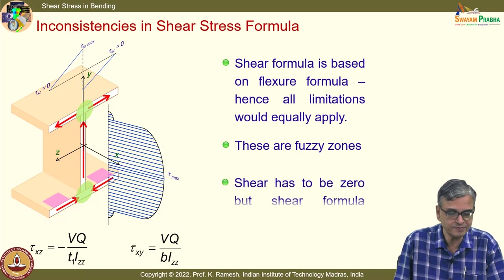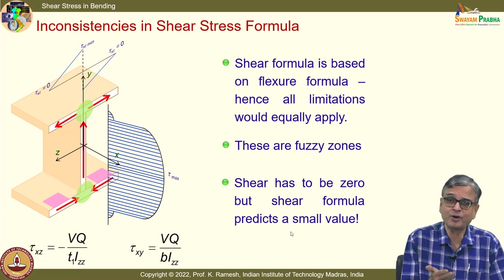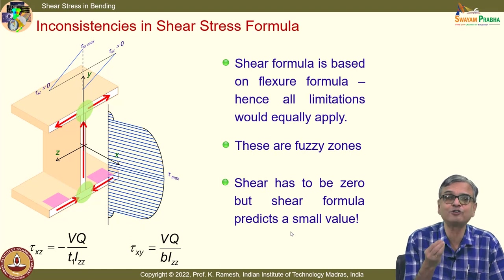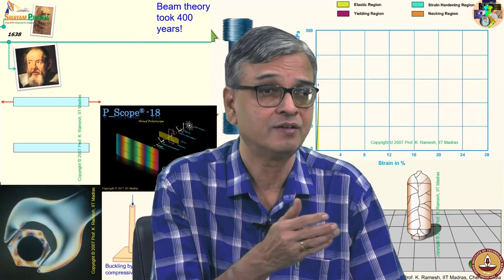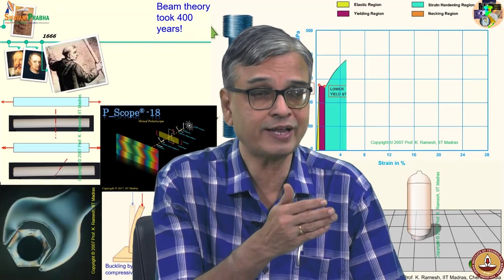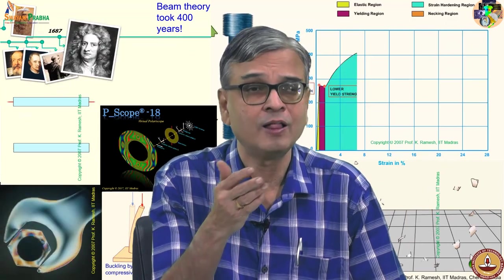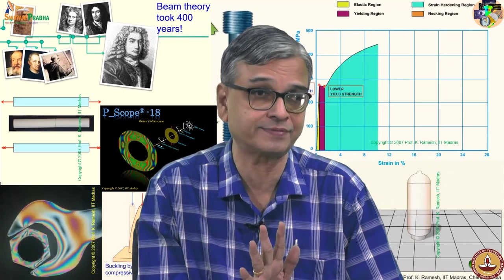From what we developed for a cross section with one plane of symmetry, we could exploit the flexure formula for a wide variety of problems — more than what we learned for torsion. There is also a very interesting concept: once you look at open sections, you find they can undergo bending as well as twisting. When you apply the load along the shear center, it only bends.